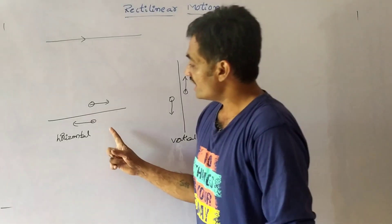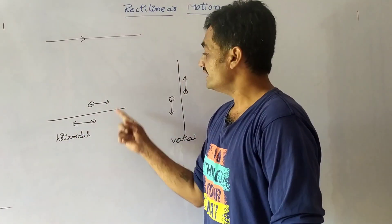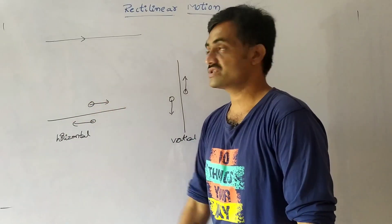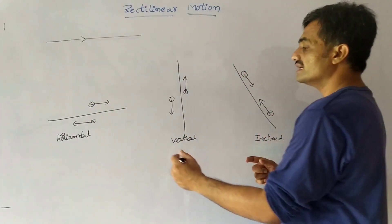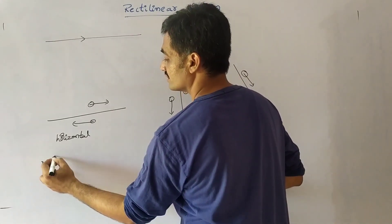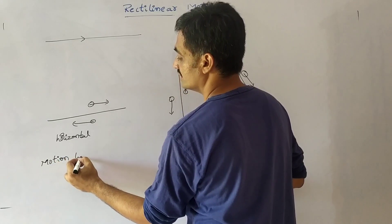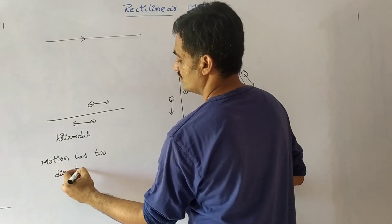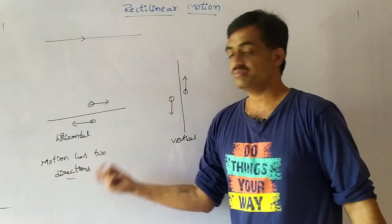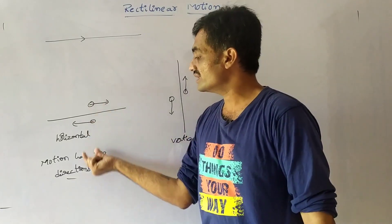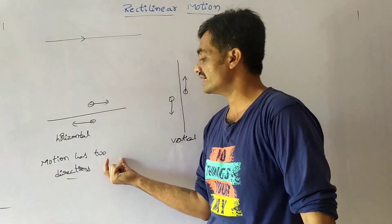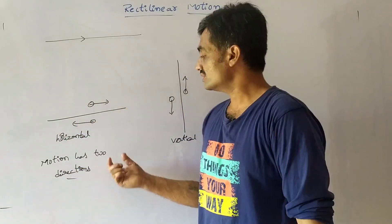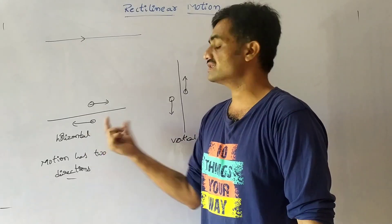As we consider a body along a straight line, it has two directions. Either it moves in the forward direction or it moves in the backward direction. So, the motion has two directions. Any motion considered along a straight line has two directions — either forward or backward.